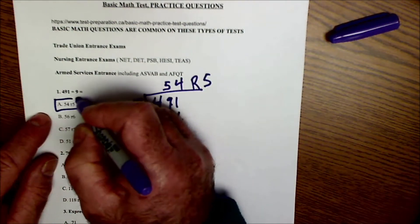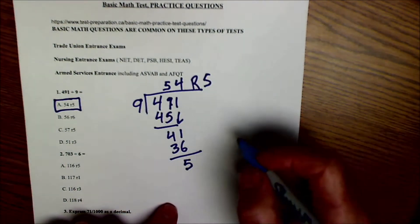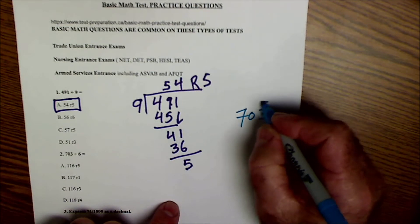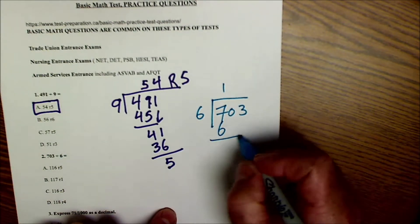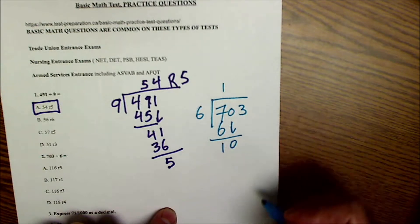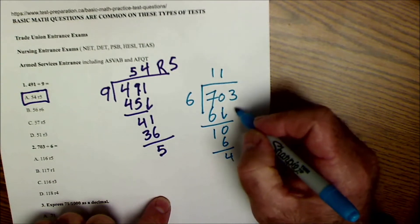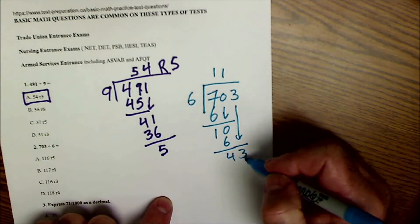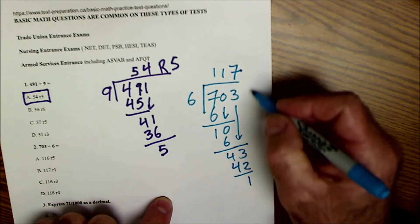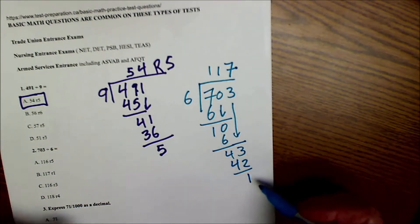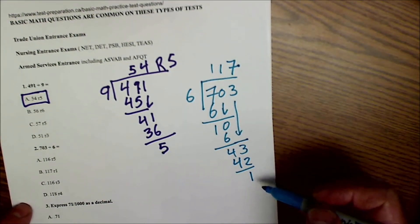Second problem will be 703 divided by 6. 6 goes into 7 one time, write it below. 7 minus 6 is 1, bring down the 0. 6 goes into 10 one time, 10 minus 6 is 4, bring down that 3. 43, 6 goes into 43 seven times to give me 42. 43 minus 42 is 1, nothing left to bring down, that's my remainder. So this would be 117 and 1/6, or 117 and a remainder of 1. I look over here and it's answer B.